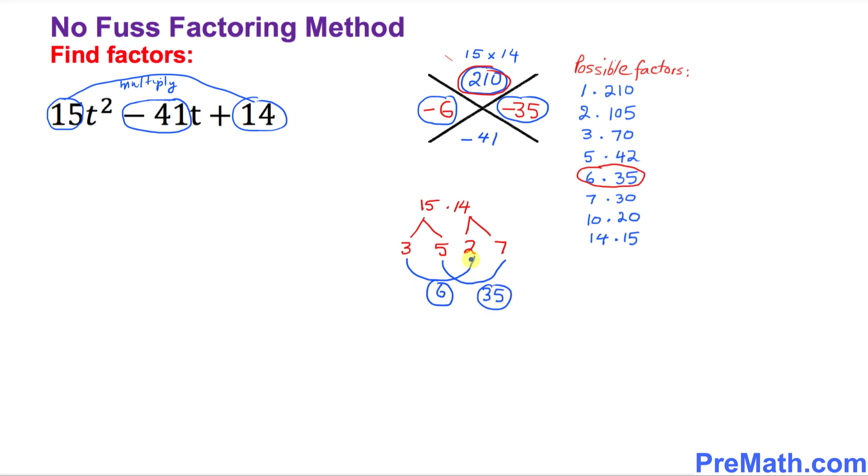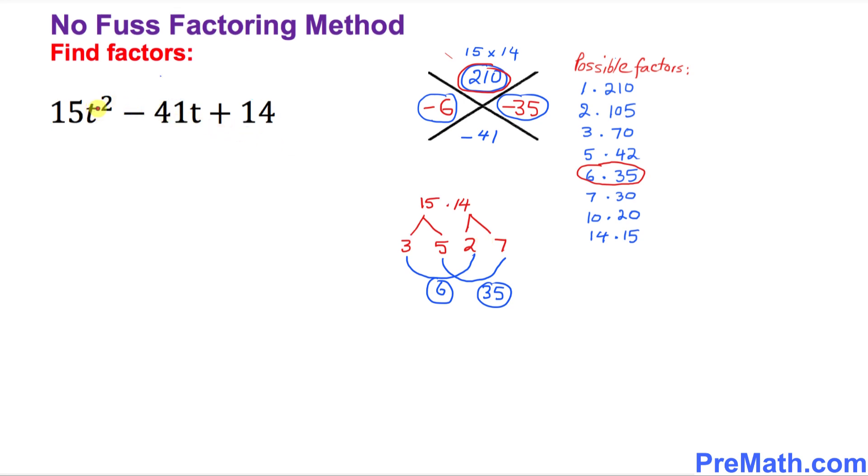Here is our next step. I want you to simply focus on this part only: 15t. Don't worry about the exponent, just disregard it. I want you to write down 15t in the first parentheses and once again 15t in the second parentheses as well. Finally, our two factors that we figured out are negative 6 and negative 35. I want you to simply write them down: negative 6 and negative 35.